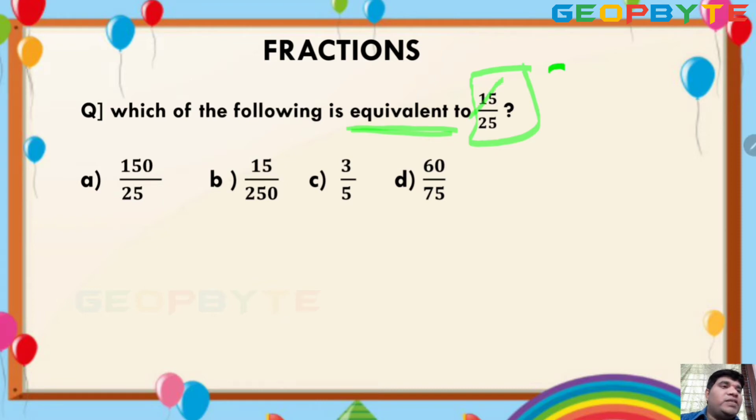5 threes, 5 fives. So 3 by 5 is the final result. In options also, simplify the fraction. Where you are getting the 3 by 5? That is the answer. But luckily, here options are directly 3 by 5 is given. So C is the answer.